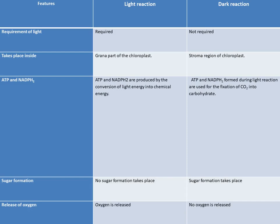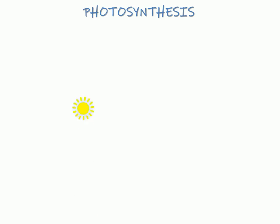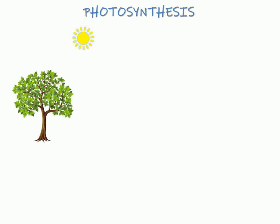Now let me make it more easy to understand the photosynthetic process through some animations. First of all, the sun comes out, then we have a tree which has chlorophyll pigments. The sun rays fall on the leaf and stomata gets opened up. The water gets incorporated through xylem from roots and CO2 from stomatal pores. The photosynthesis occurs.